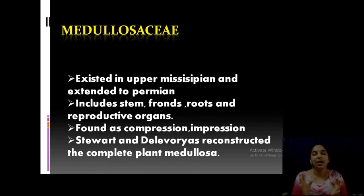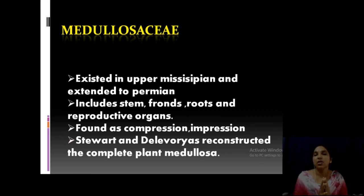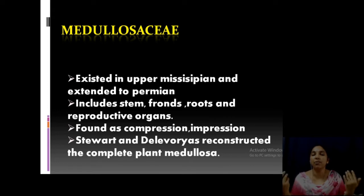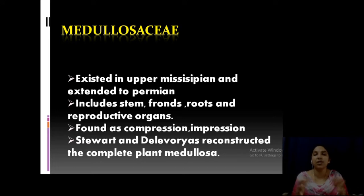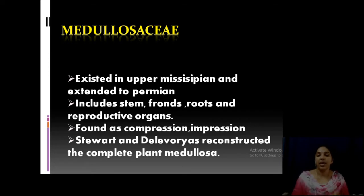Both male and female reproductive organs can be observed, and most of the fossil forms are compressed or impression forms. The two famous palaeontologists, Stewart and Delevoryas, reconstructed the Medullosaceae members. Like other fossil groups, this family is also fossilized by stem, leaf, and reproductive parts separately, and later the paleobotanists reconstructed and made them into one plant. Medullosaceae includes several genera, but you have to study only one member — Medullosa — and the complete Medullosa was reconstructed by Stewart.